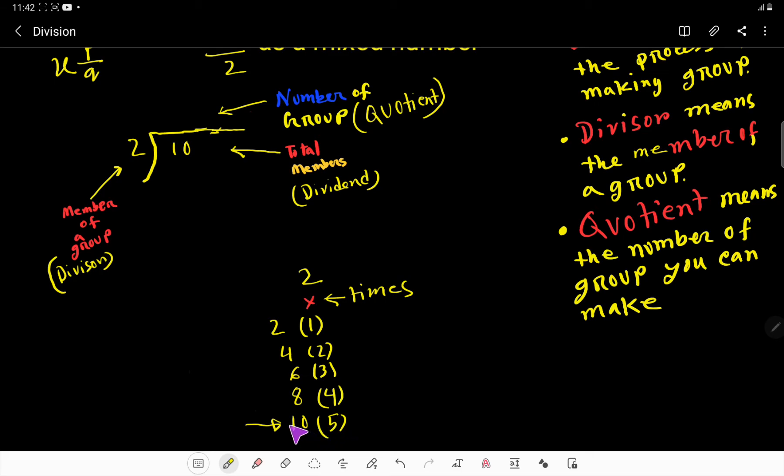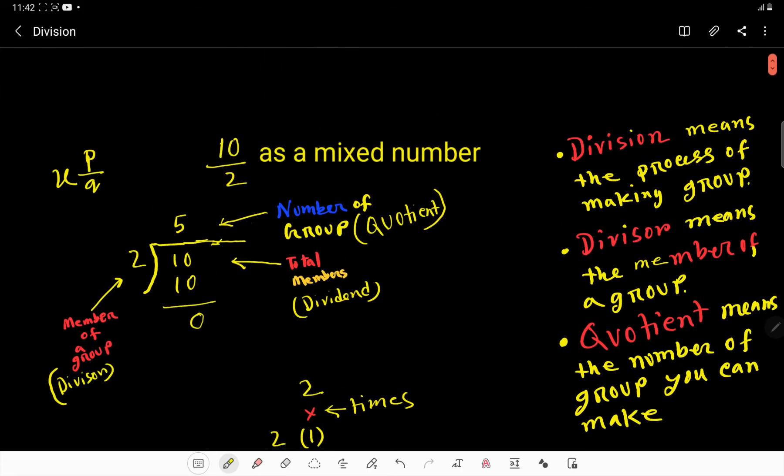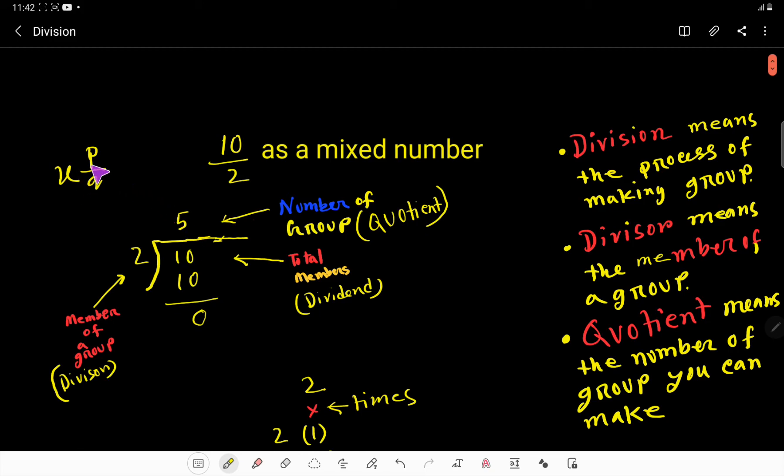2 times 5 gives us 10, that is 2 goes into 10 five times. So if you deduct, you are getting 0 remainder.